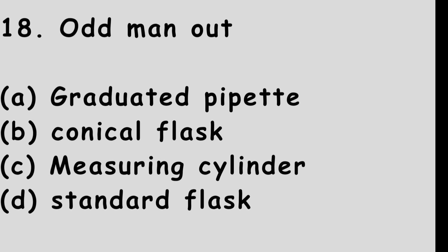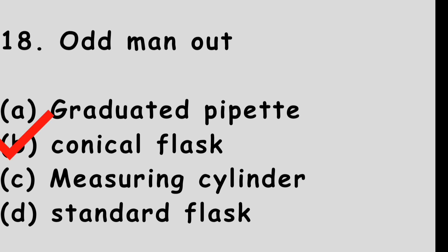Question number 18: Odd one out. Option A: Graduated pipette. Option B: Conical flask. Option C: Measuring cylinder. Option D: Standard flask. The right answer is option B, conical flask.